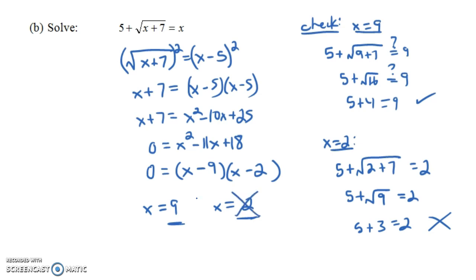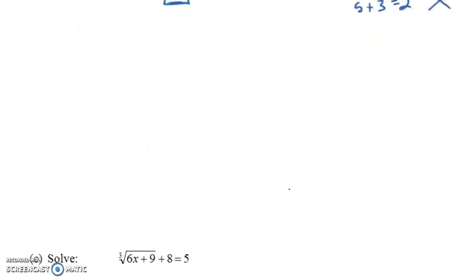Even though we didn't do anything wrong in solving this, the 2 was not actually a solution. Now the issue is here, the square root of 9, we say it's 3, but there's actually two numbers that if you multiply them together you get 9, 3 and negative 3. If the square root of 9 were allowed to be negative 3, then 5 plus negative 3 would equal 2. But by definition the square root of 9 is positive 3, so this isn't true.